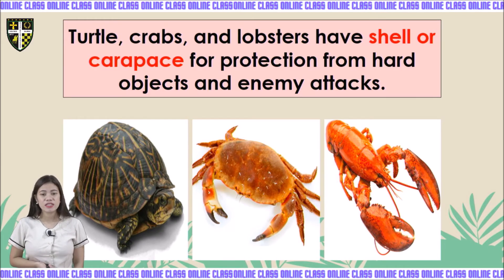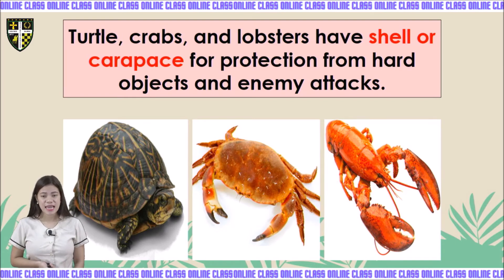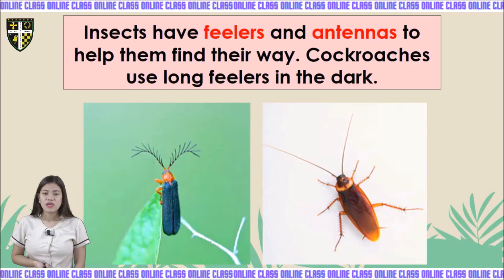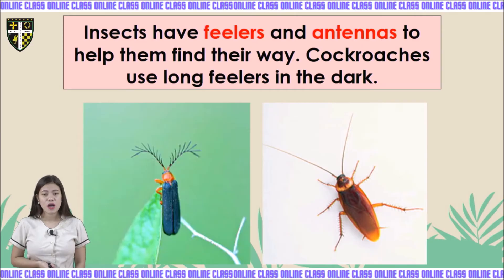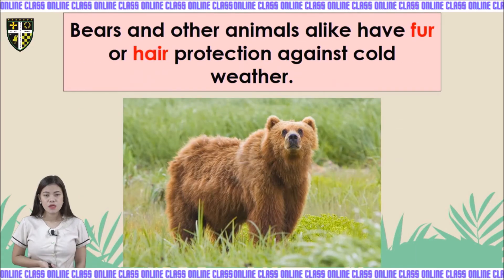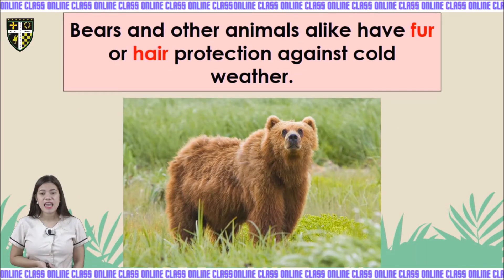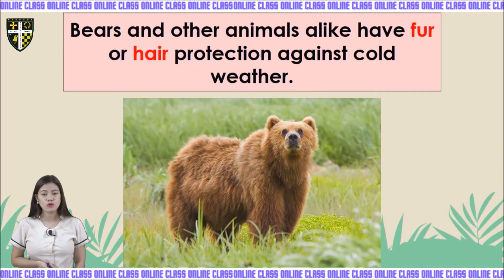Turtles, crabs, and lobsters have a shell or carapace for protection from hard objects and enemy attacks. Insects have feelers and antennas to help them find their way — cockroaches use long feelers. Bears and other animals have fur and hair for protection against cold weather.